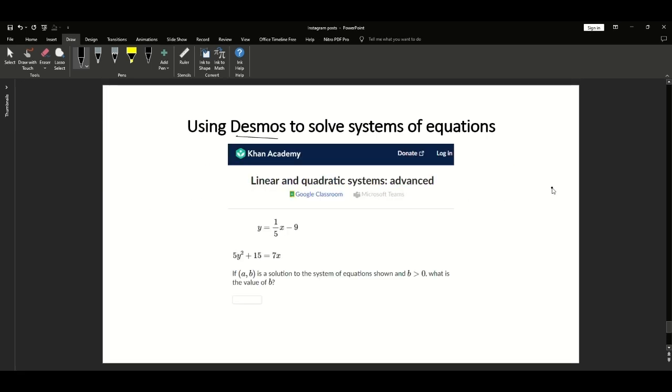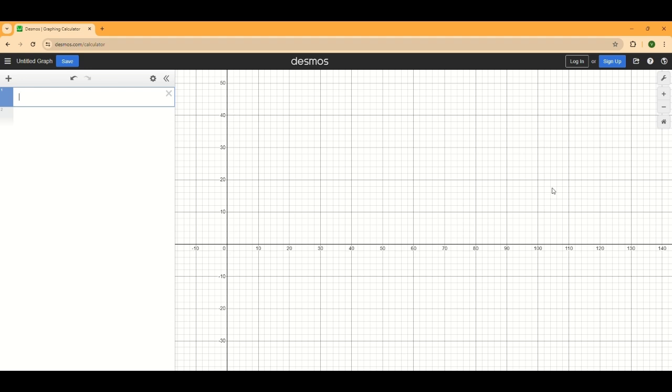Let's enter the two equations in the Desmos calculator and find the points of intersection. Let's do it. So y equals x divided by 5 minus 9, and 5y squared plus 15 equals 7x.